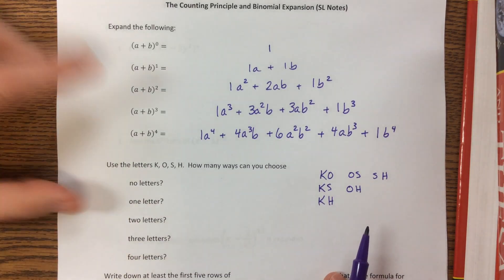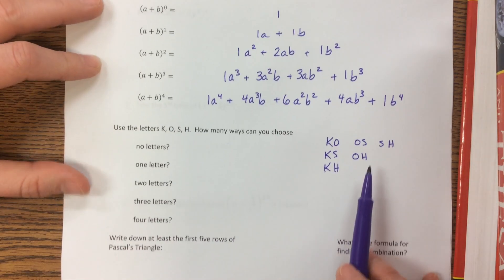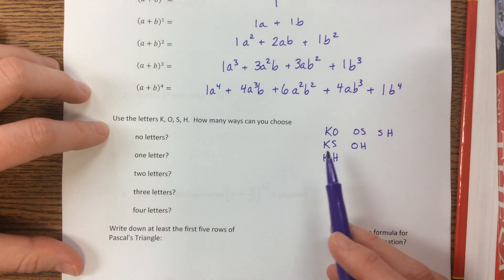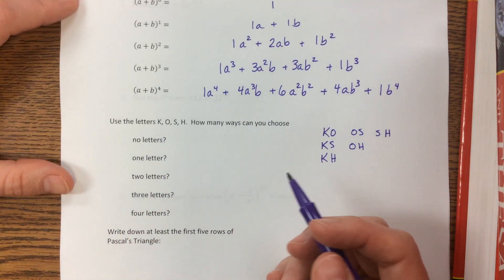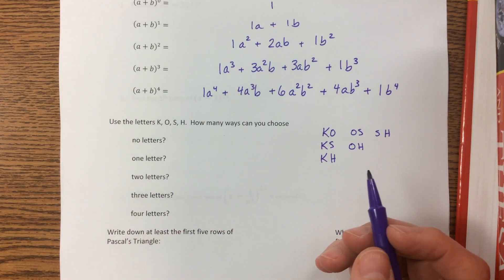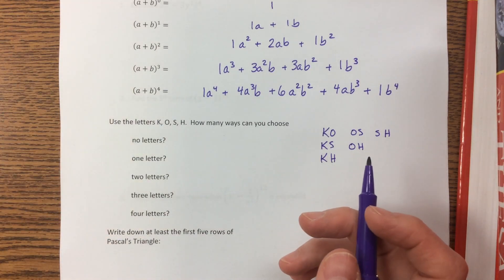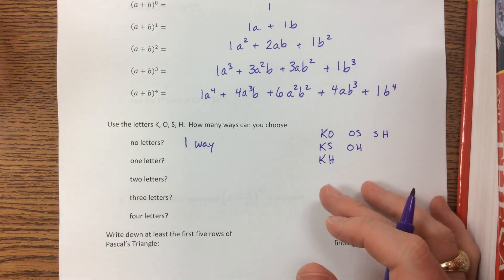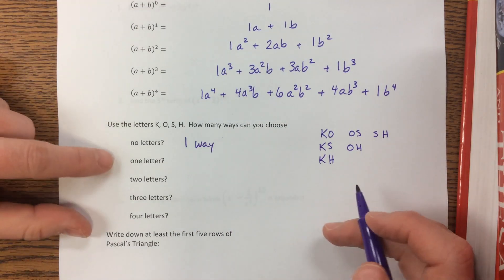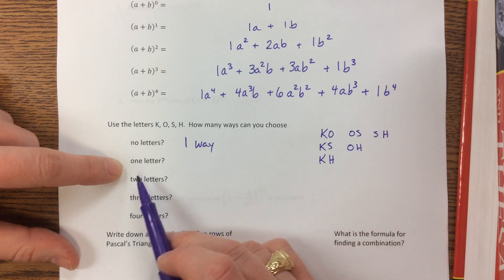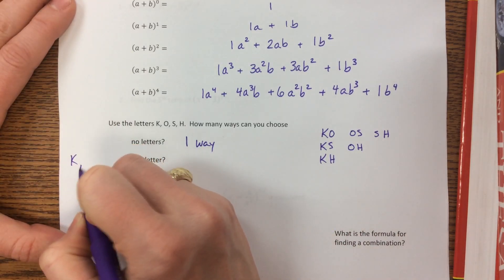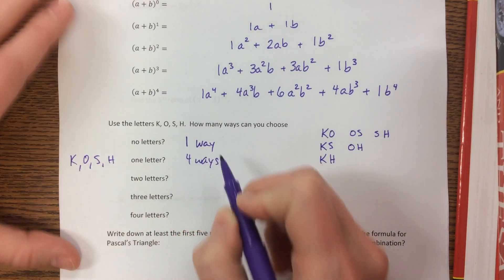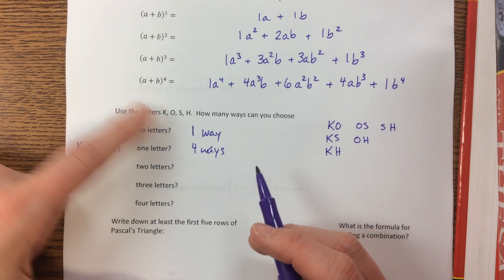Then we're making a connection here between this is the binomial expansion and the facts and then the counting principle. So if I have the letters K-O-S-H, yes, I did that on purpose. If I'm going to pick no letters, I mean, it doesn't make a whole lot of sense. But there's only one way to pick none of the letters. You pick none of them. You're done. The next thing is how many ways can I pick one letter? Well, I could pick a K or I could pick an O. I could pick an S or I could pick an H. There's four ways that I could pick just one letter out of those four letters.